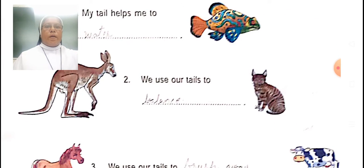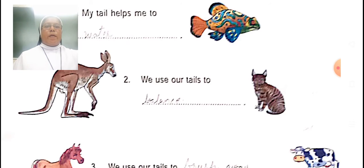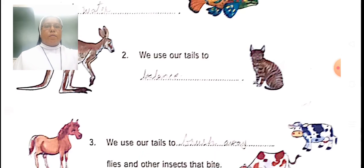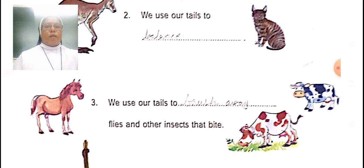Another example — kangaroo and cat. How do they use their tails? We use our tails to balance. Keeping balance and avoiding losing it.